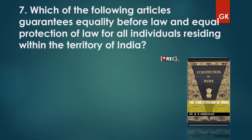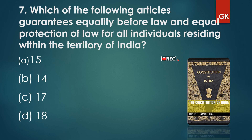Question 7: Which of the following articles guarantees equality before law and equal protection of law for all individuals residing within the territory of India? Options: Article 15, Article 14, Article 17, or Article 18. The answer is Article 14. Article 14 guarantees equality before the law and equal protection of law for all individuals residing within the territory of India.